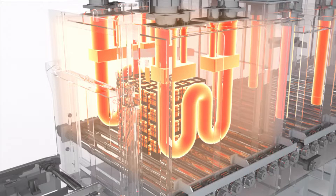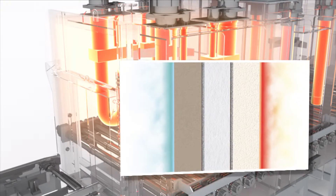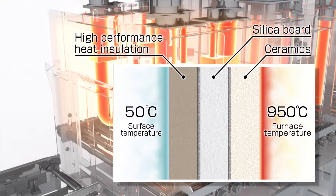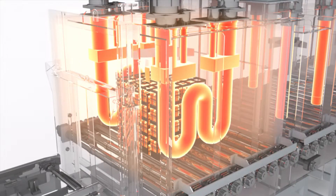Further, the wall of the furnace uses two different types of insulation materials: a high-functionality insulation material as the outer layer and high-insulation ceramic fibre as the inner layer. This way, the wall reduces heat energy loss in the furnace, improves combustion efficiency, and significantly reduces energy costs.